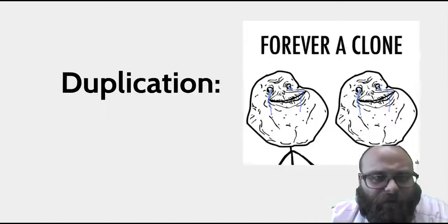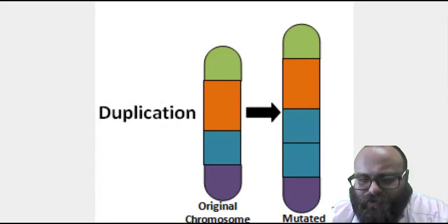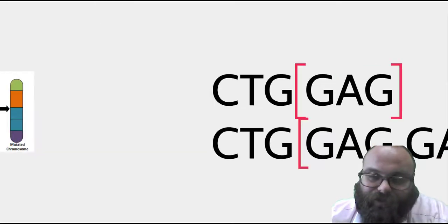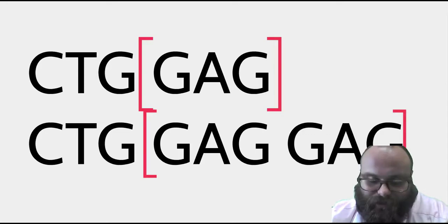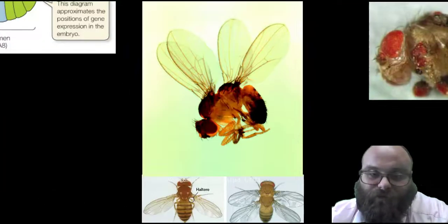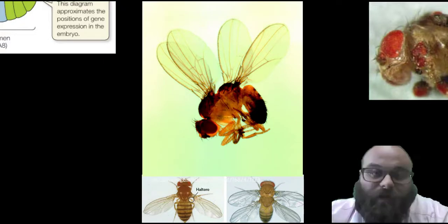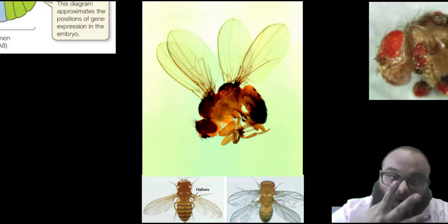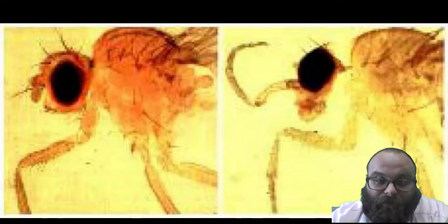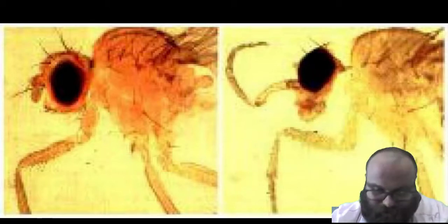Duplication mutations are where a segment of genetic information is doubled up. For example, if we double up a GAG codon, we've altered the genetic sequence and potentially doubled up whatever that trait was. Scientists doubled up the Hox gene for the body segment where wings grow — normally fruit flies have two wings, but this fly had an extra body segment and four wings. They also added another body segment between the head and body, producing a neck that gave the fruit fly much greater head mobility.